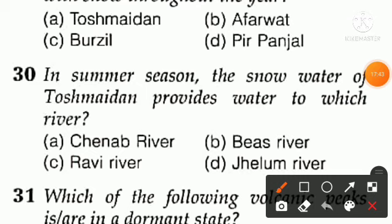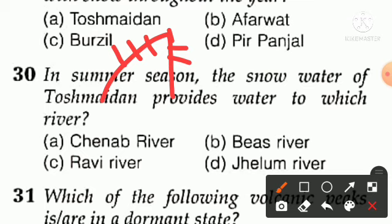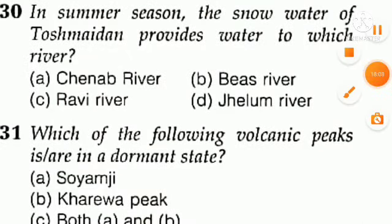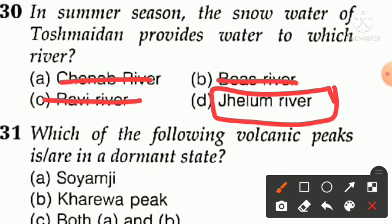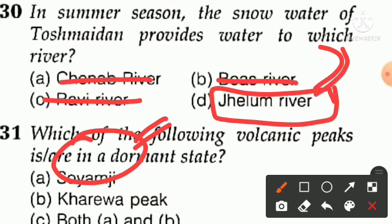Question number thirty: in summer season, the snow water of Tosh Maidan provides water to which river? When the sun melts the snow, the water flows into a river. Option A — Chenab, option B — Beas, option C — Ravi, option D — Jhelum. Chenab is not the answer, Beas is not the answer, Ravi is not the answer. The answer is Jhelum — Tosh Maidan adds water to the Jhelum River. Note: the source of the Jhelum is Verinag.